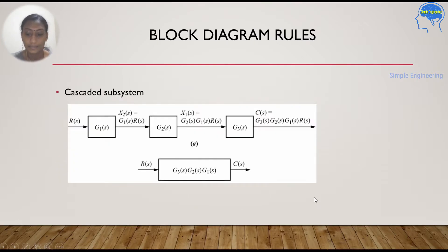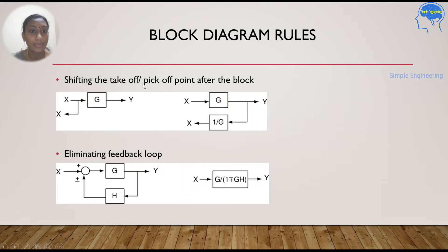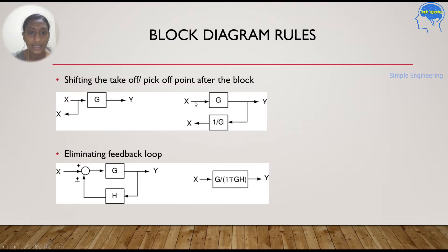Next is shifting the takeoff point or pickoff point after the block. Here is your block and here is the takeoff point. You have to move this point after the block. When doing so, you have to add a block which is the inverse of the original block — that is, 1/G — in that branch.